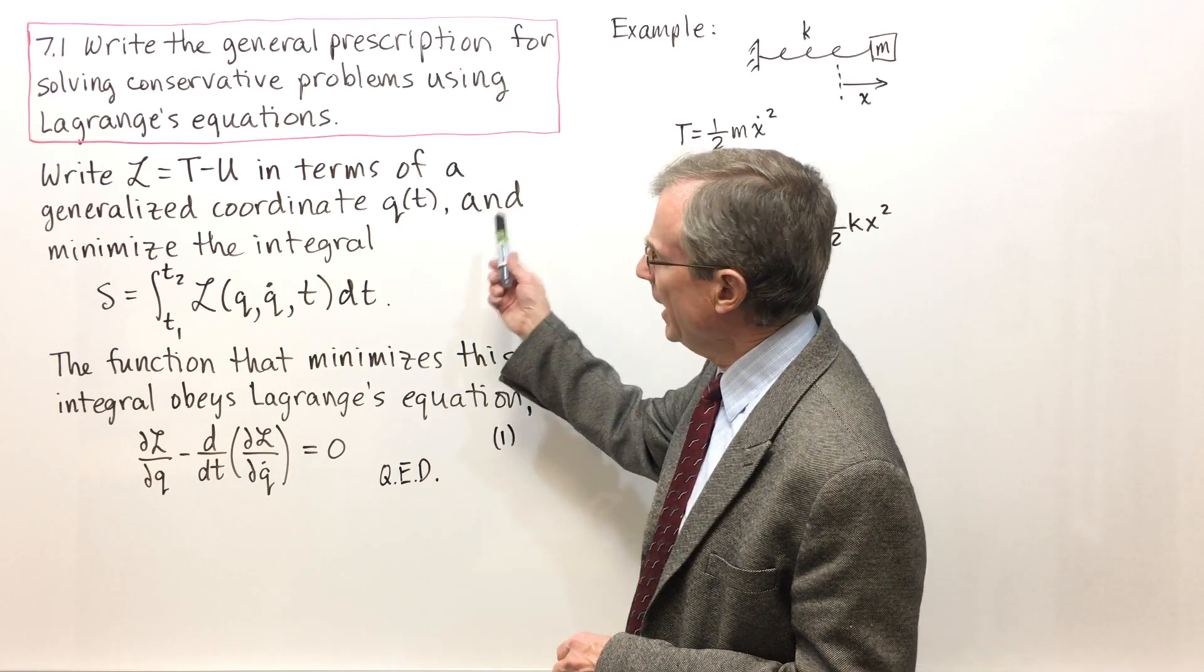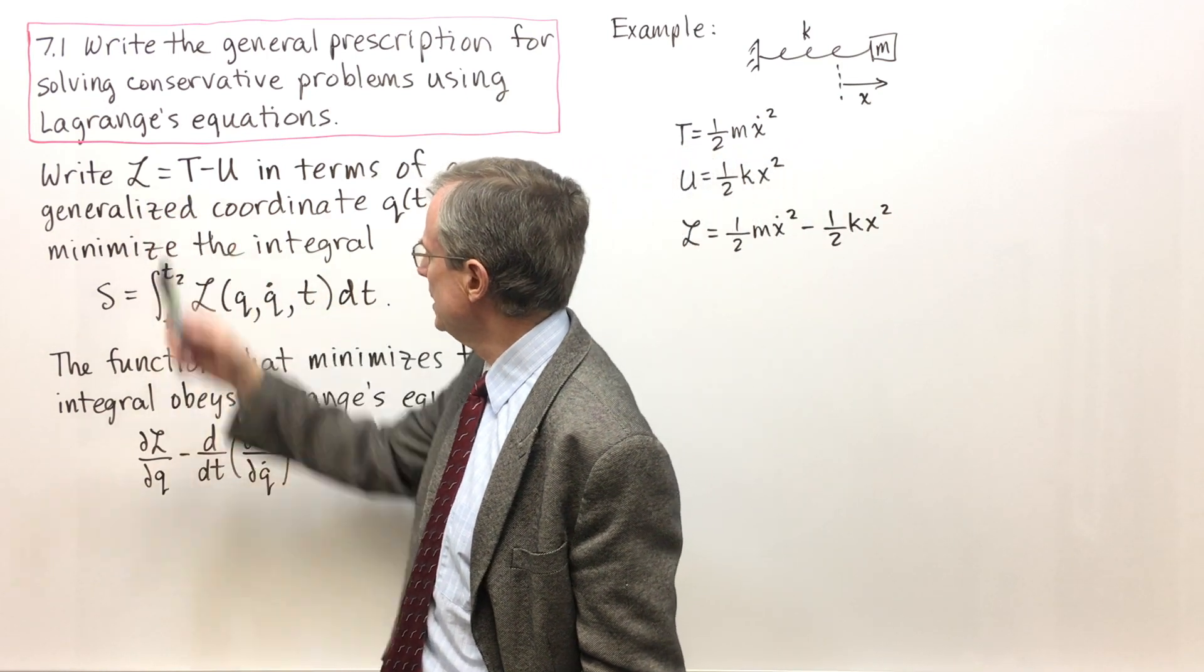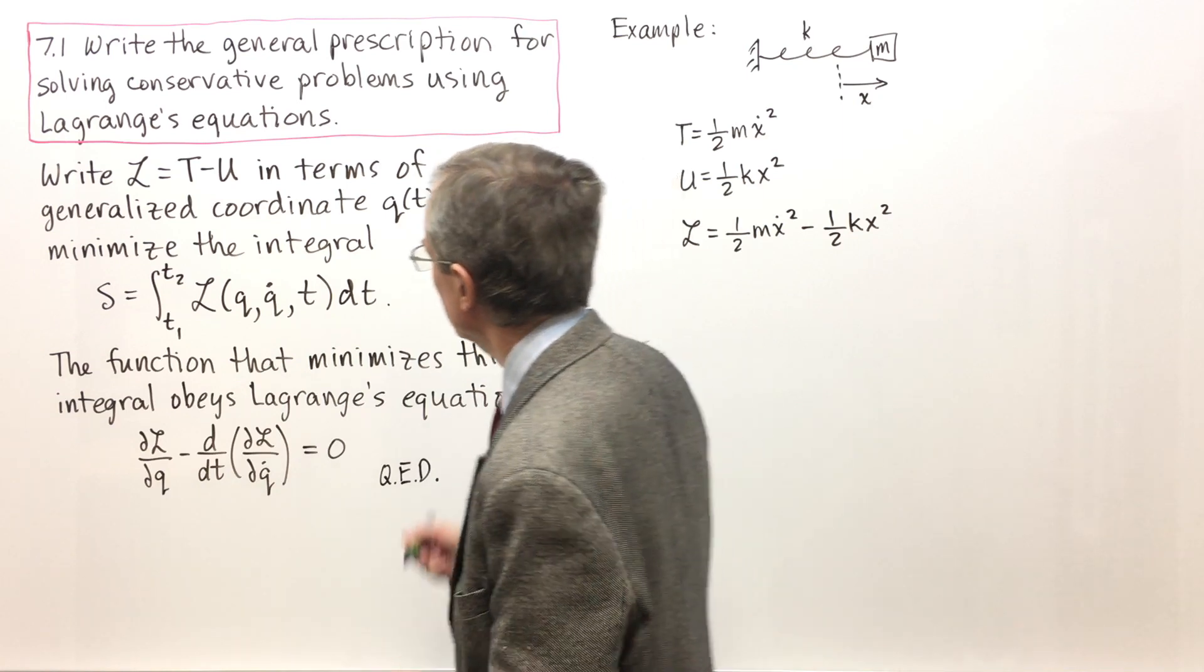The prescription is to first write L equals T minus U. L is called the Lagrangian.